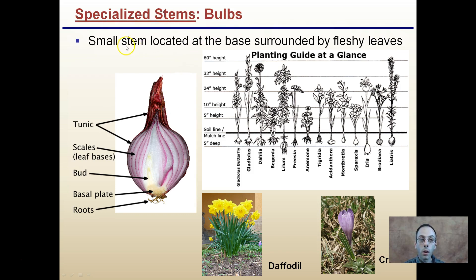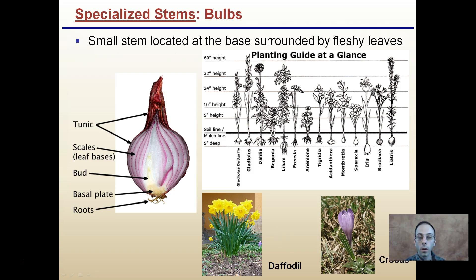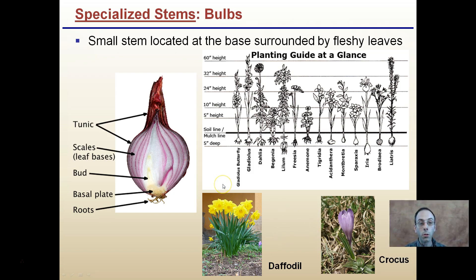Another type of specialized stem is bulbs. They're a small stem located at the base, surrounded by fleshy leaves. If you've ever had to plant bulbs, you might have to plant them at various depths based on what plant it is. Daffodils are very commonly seen in the springtime, as are crocuses. Both are very early plants that grow in early spring when there's not a lot of energy or competition. Because they have this stored energy in the bulb region, they're able to grow early and take advantage of sun before larger trees shade out the area.